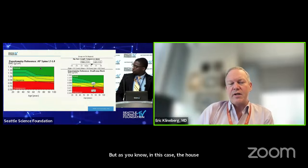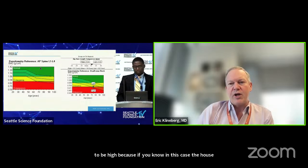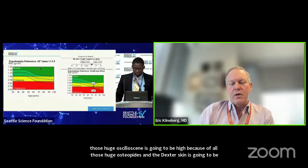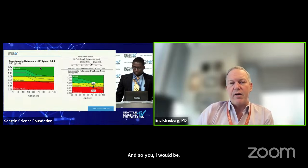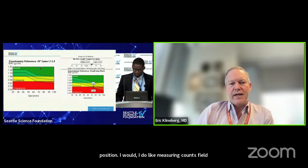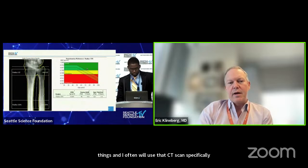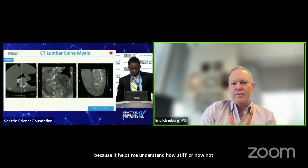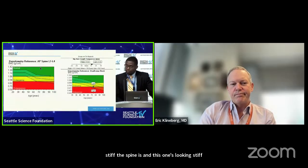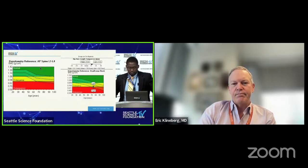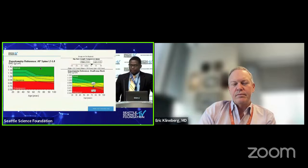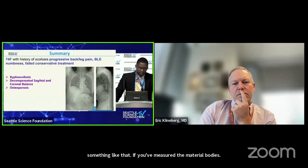All the data we have has been generated from DEXA scans, so it's on us to prove that Hounsfield units at planned stopping levels matter. In this case the DEXA scan will be high because of all those huge osteophytes — the bone is well-sheltered by partial fusions — so be wary of bone quality. I look very carefully at Hounsfield units to think about where to end things and use the CT scan specifically for endpoint and surgical planning because it tells me how stiff or not stiff the spine is.